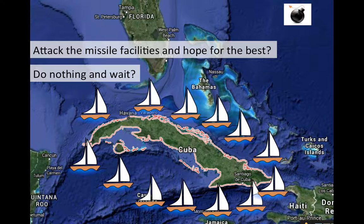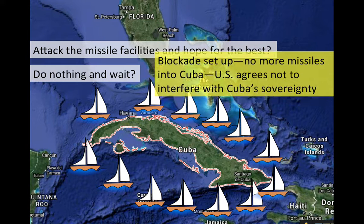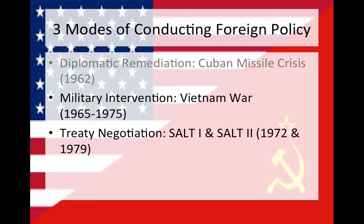After the blockade was set up, diplomatic channels were opened with the Soviets, and JFK and his top officials talked to Nikita Khrushchev and his top officials. Ultimately, what was agreed on was that the Soviet Union would relinquish its missile facilities on Cuba in exchange for the United States pledging not to interfere with Cuba's sovereignty. You may recall the Bay of Pigs fiasco in this instance. So that was diplomatic remediation.